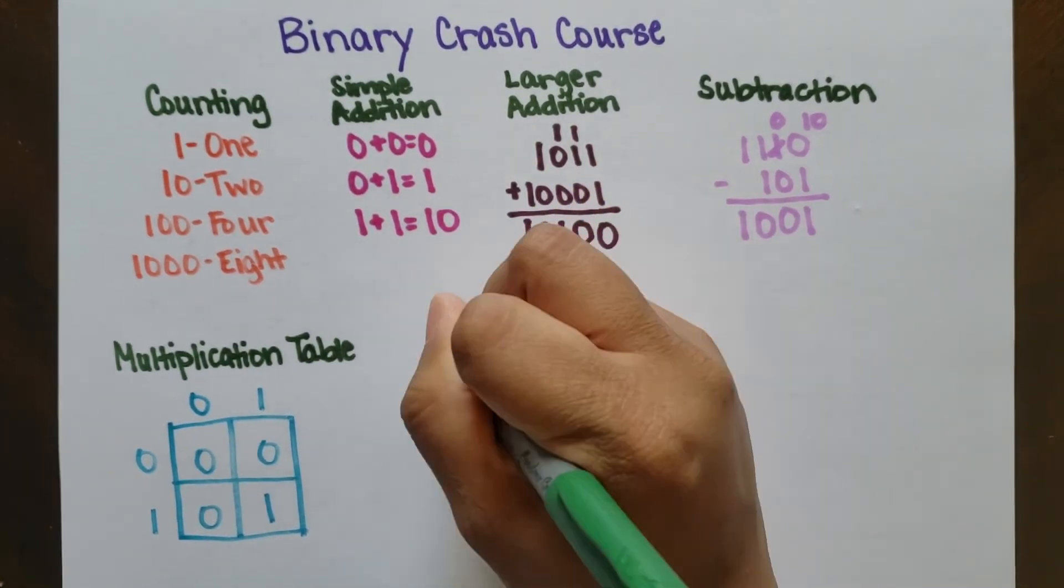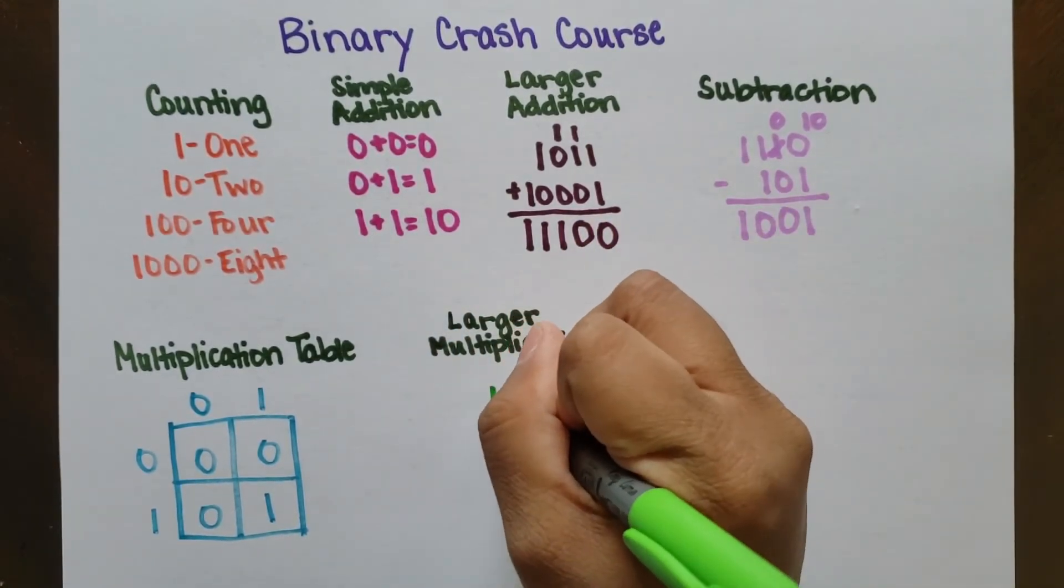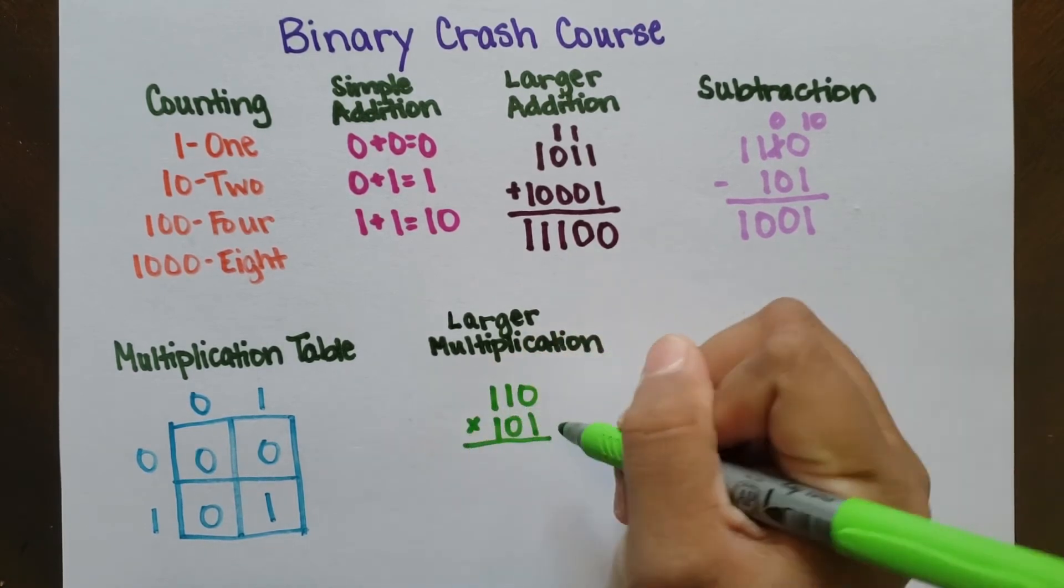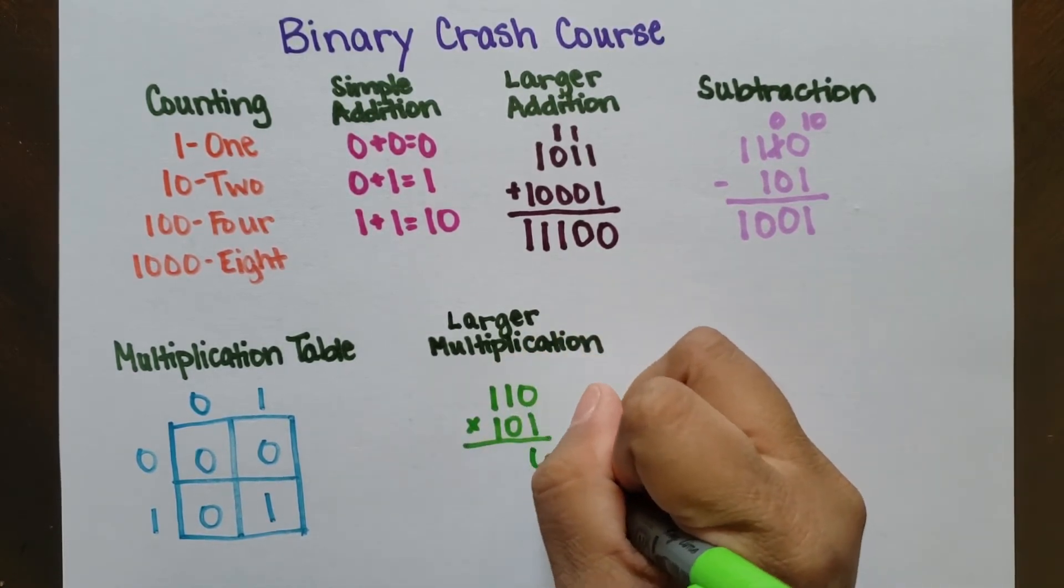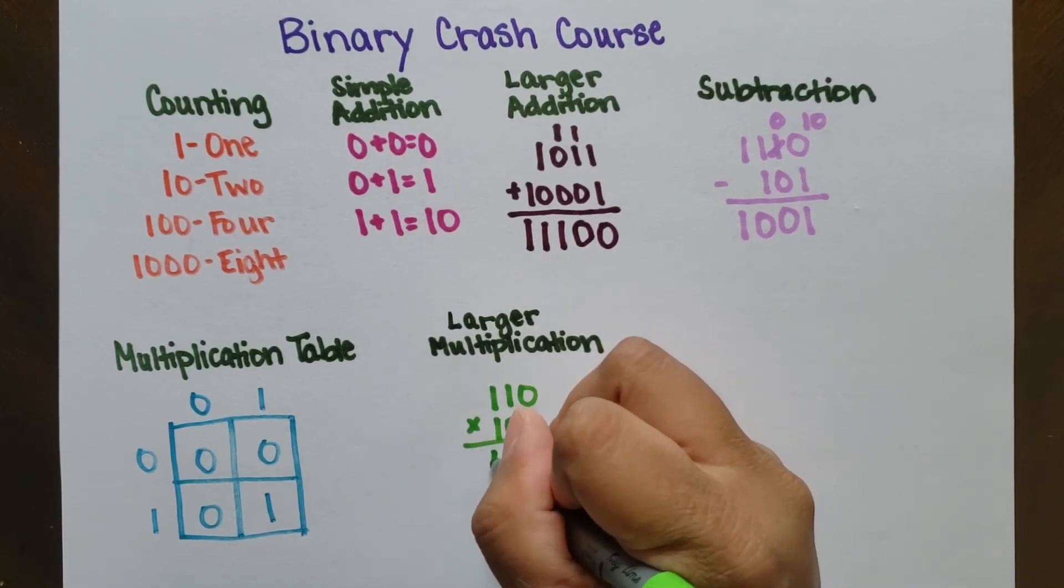Now that we know our multiplication table, we can go ahead and multiply some larger numbers. We're going to take 110, which is 6, and multiply it by 101, which is 5. Well first we're going to take the bottom right 1 and multiply it across the top, and 1 times anything is just itself, so we get 110.